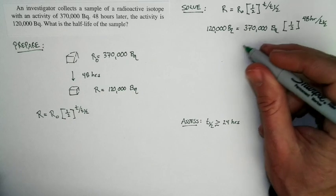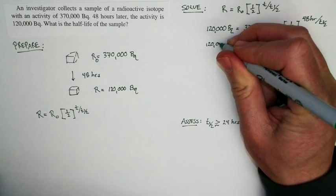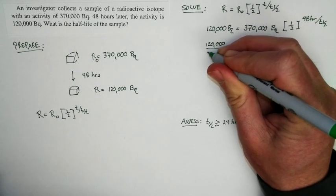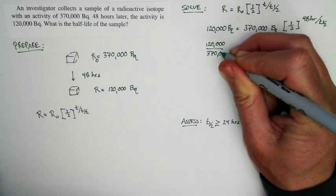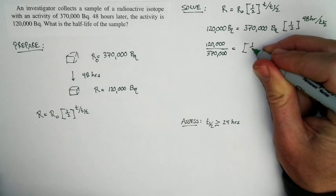So then what I'm going to do is divide both sides of the equation by 370,000 Becquerels. So I got 120,000 over 370,000 is equal to one-half